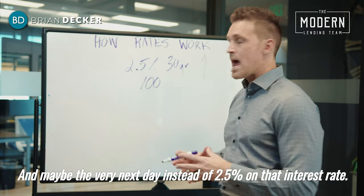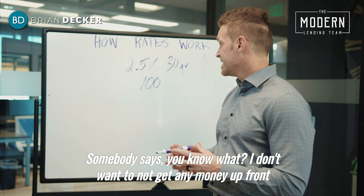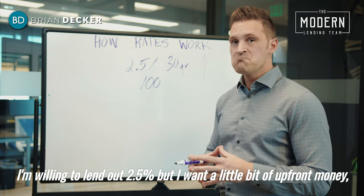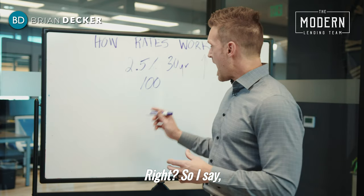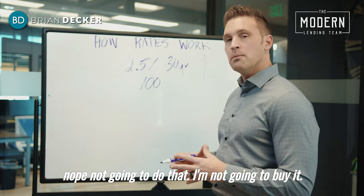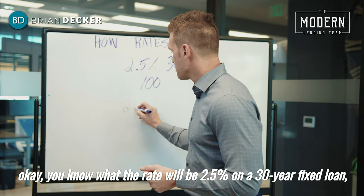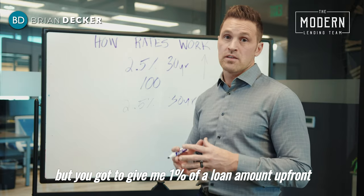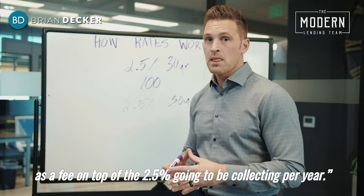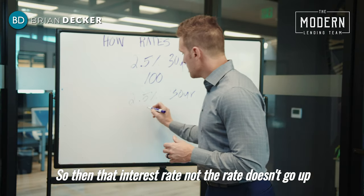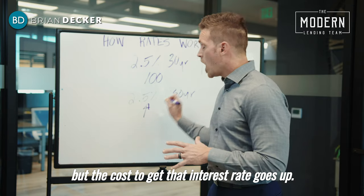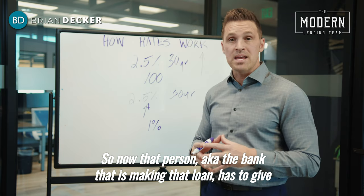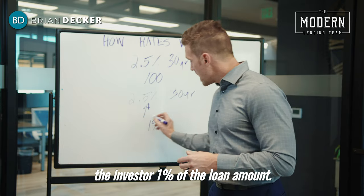Maybe the very next day, instead of 2.5%, somebody says they don't want to lend out at 2.5% without getting any money upfront. So they won't buy it. What happens then is the market comes back and says, 'Okay, the rate will be 2.5% on a 30-year fixed loan, but you have to give me 1% of the loan amount upfront as a fee on top of the 2.5% collected per year.' So the rate doesn't go up, but the cost to get that interest rate goes up. The bank making that loan now has to give the investor 1% of the loan amount.